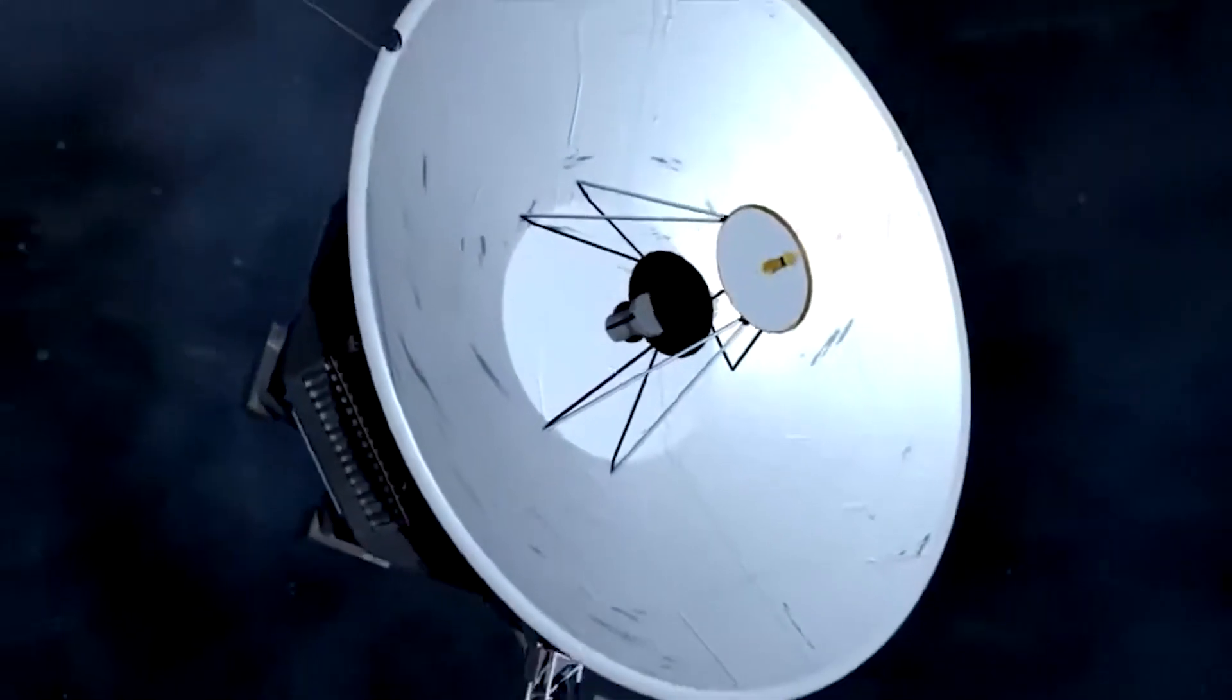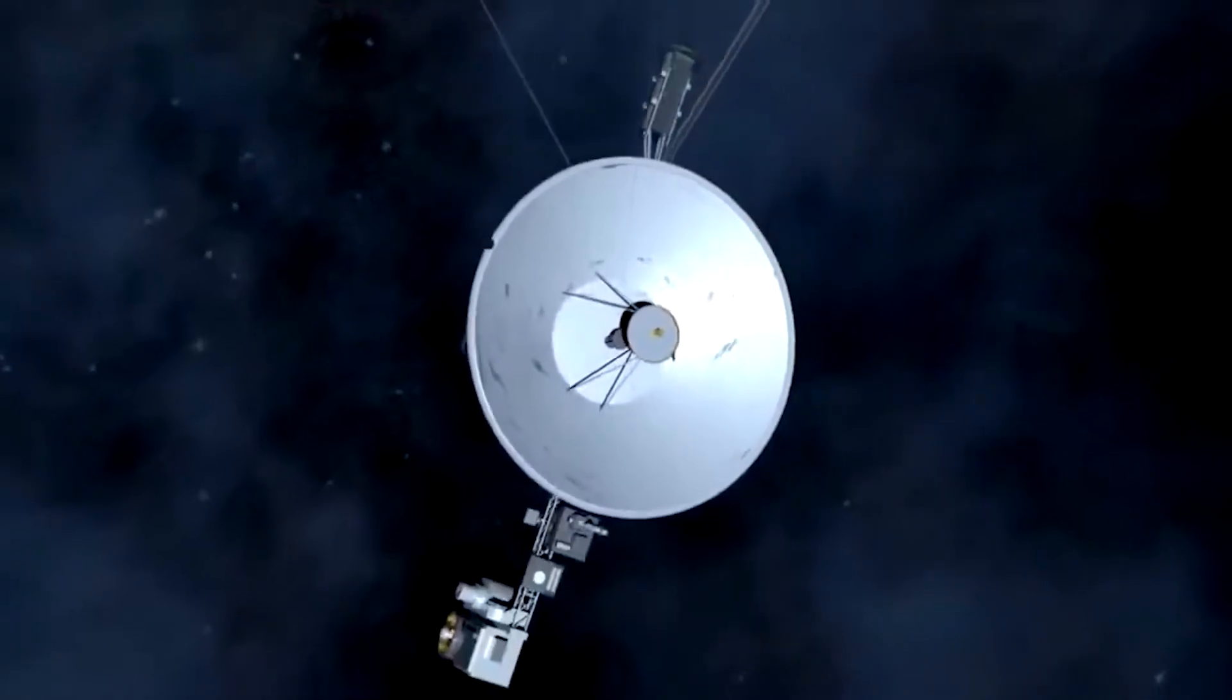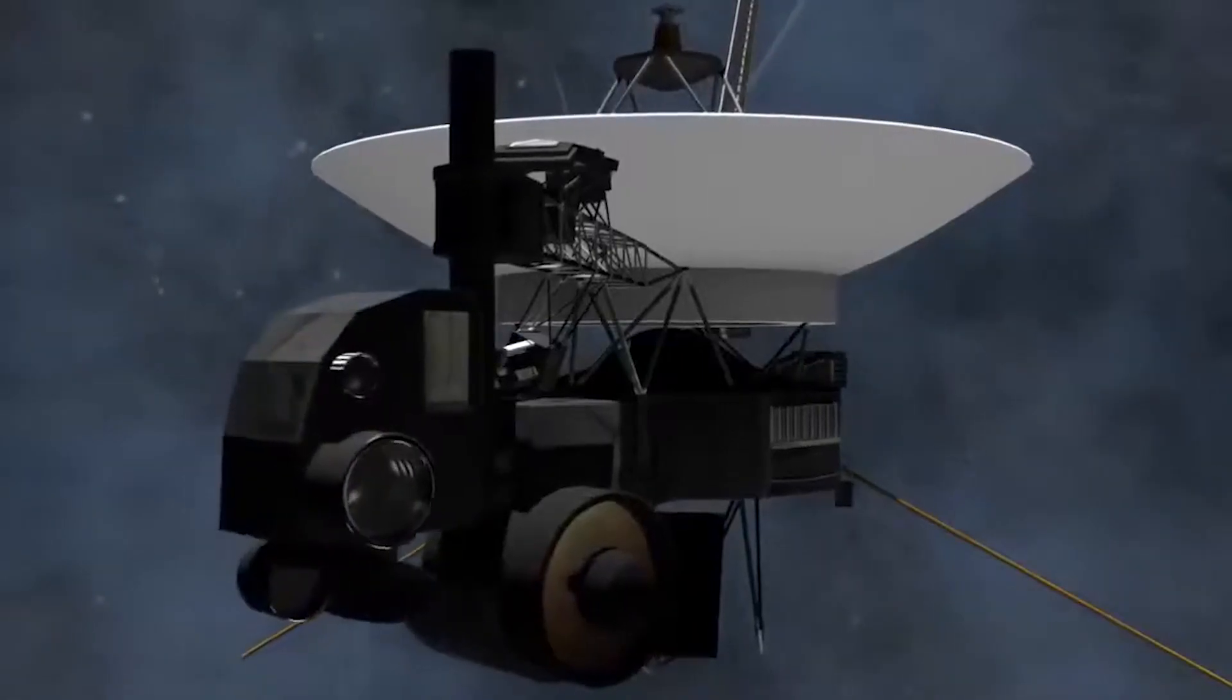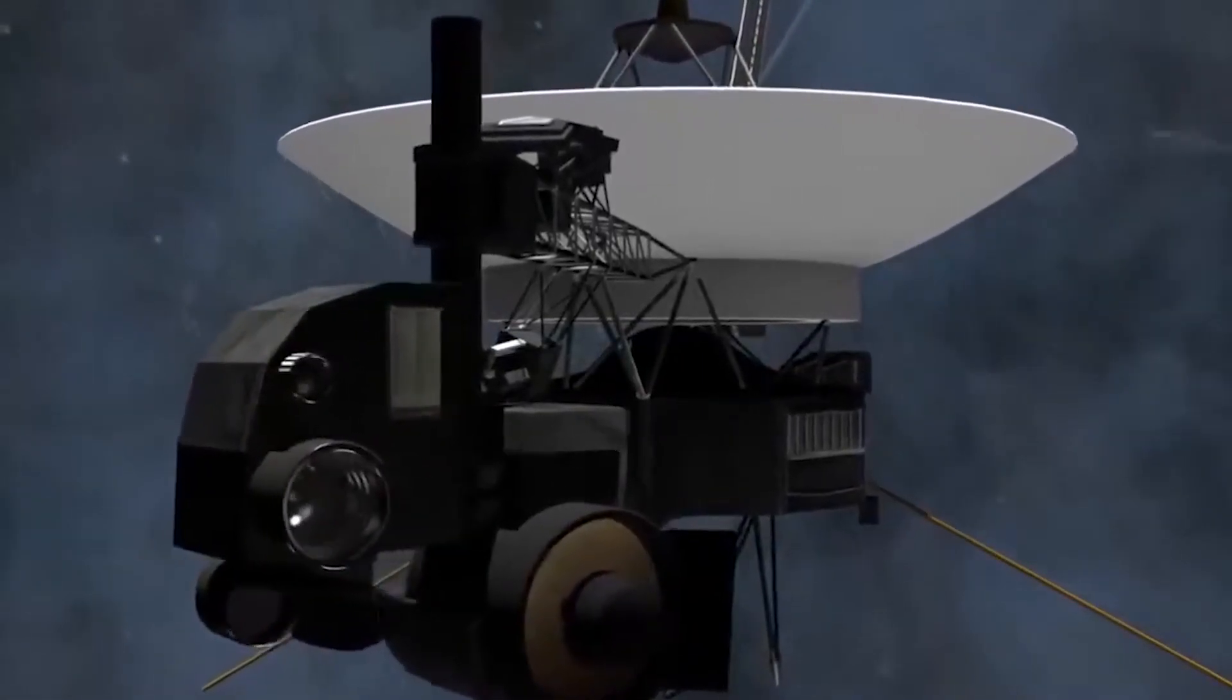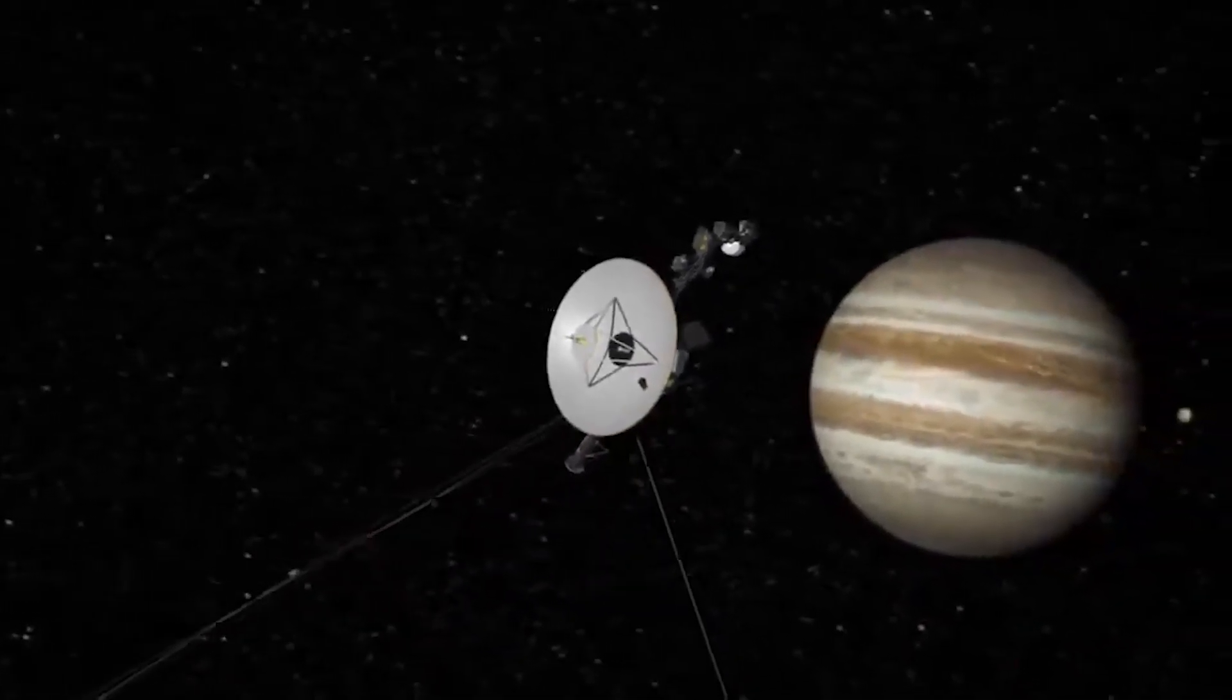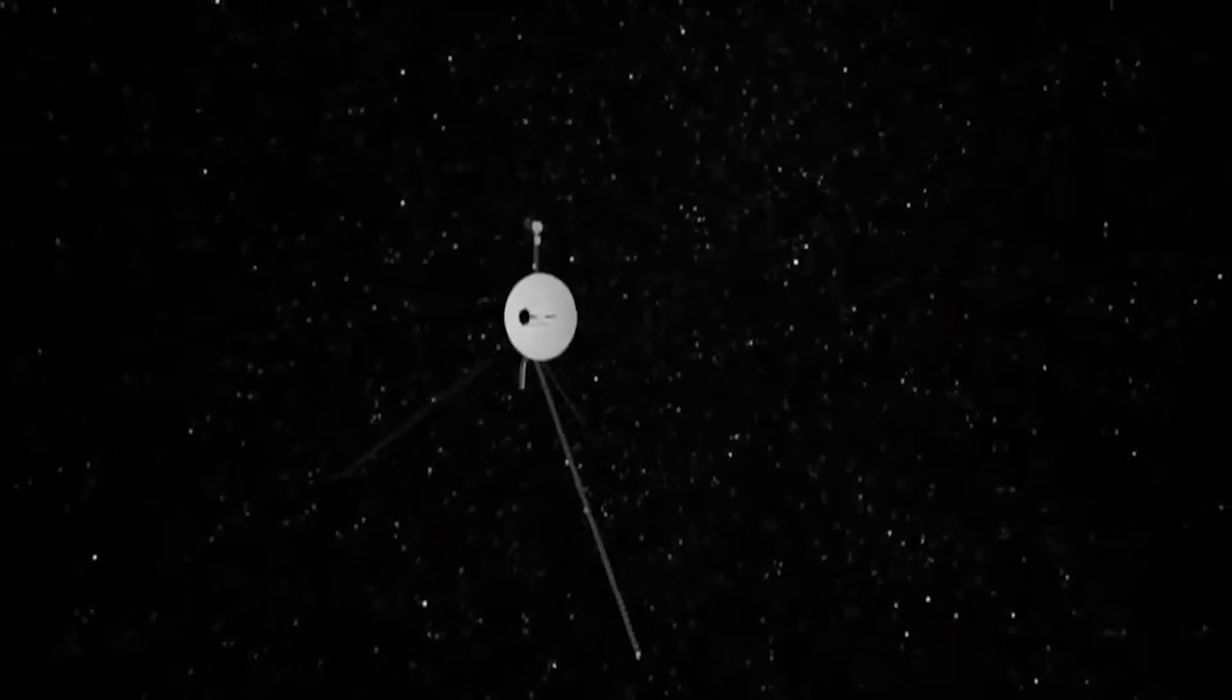You see, the Voyager spacecraft have little thrusters that allow them to face the Earth at necessary times, most importantly, when they're about to send information back to the team. These thrusters, essential for the reorientation of the spacecraft, require a power source to draw from, and this is where the extra power source comes in, a tank of hydrazine fuel for the thrusters.